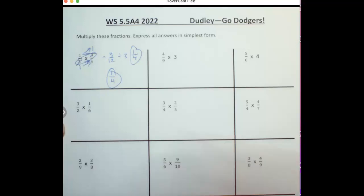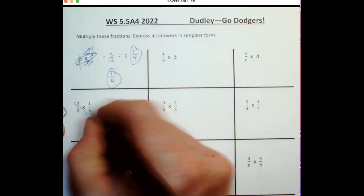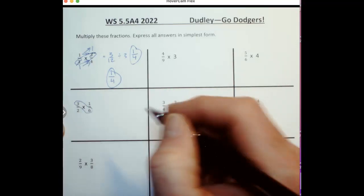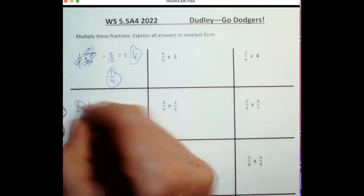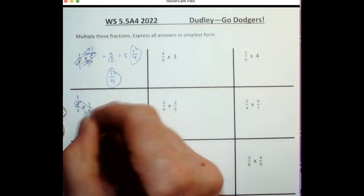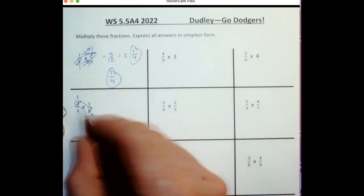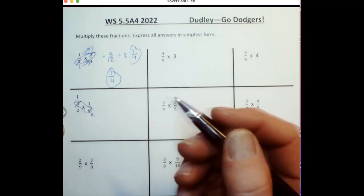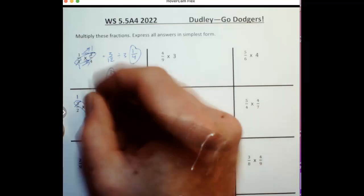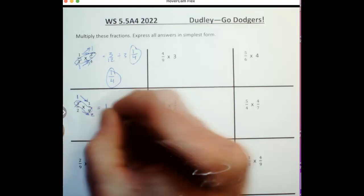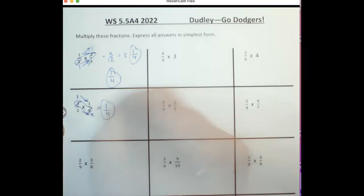I'll do another one here. Notice how when we multiply these diagonal numbers here, I can divide these both by 3. So 3 divided by 3 is 1, 6 divided by 3 is 2. Now I can't do anything here because 1 and 2, the greatest common factor is 1, or the only shared factor, so I just multiply now. 1 times 1 is 1, 2 times 2 is 4, the answer is 1 fourth again.